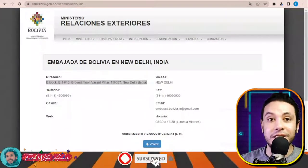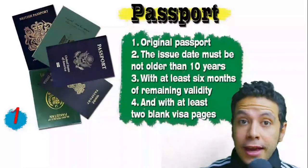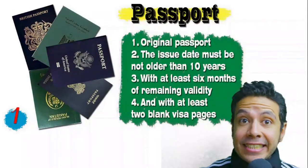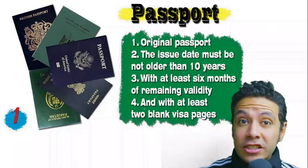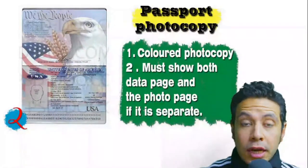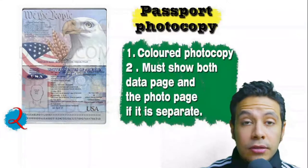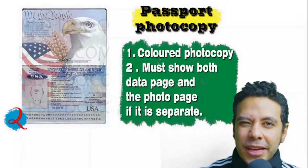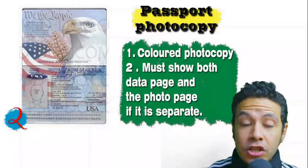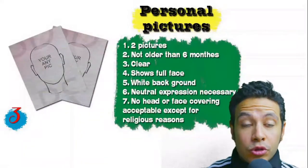For the required documents: your passport must be original, not older than 10 years, with at least six months of remaining validity and at least two blank visa pages. You will also need a photocopy — preferably colored — showing both the data page and photo page. In some cases you may need to photocopy every single page, but generally only the data and photo pages are needed.